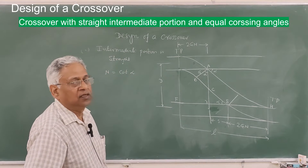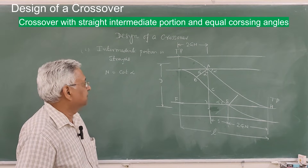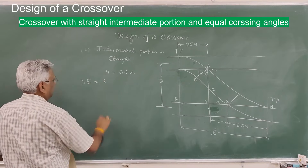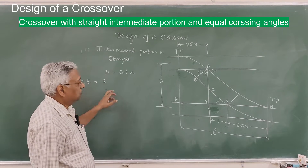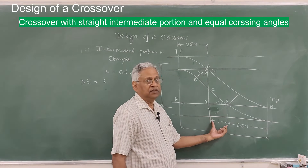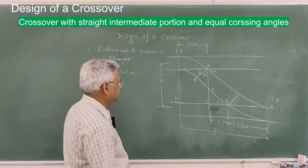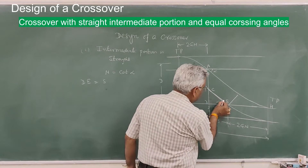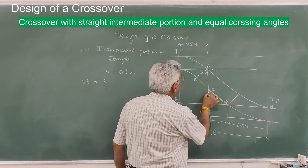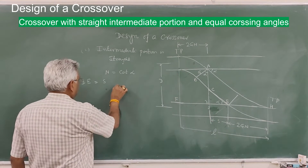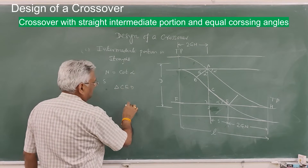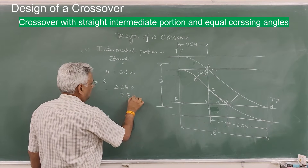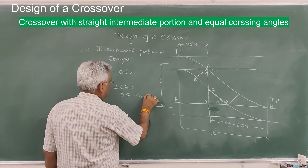D is known — you have to put a crossover between these two parallel tracks. DE is equal to S. Because the intermediate track is straight, you can consider triangle CED. In that triangle, DE equals CD multiplied by cot alpha.